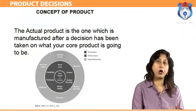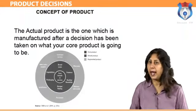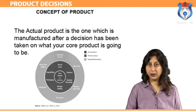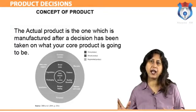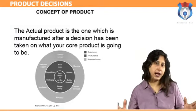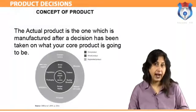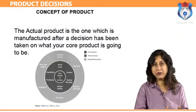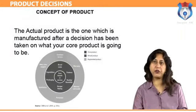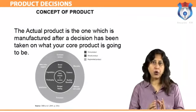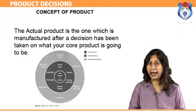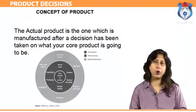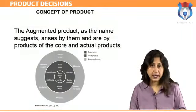The actual product is the one which is manufactured after a decision has been taken on what your core product is going to be. For example, if your core product is going to be a status symbol, your actual product will be a very high quality product with high pricing. On the other hand, if the product is a convenience product, the production would be on the basis of value for money. Actual products are quantifiable in nature and have properties like color, branding, quality, and so on.